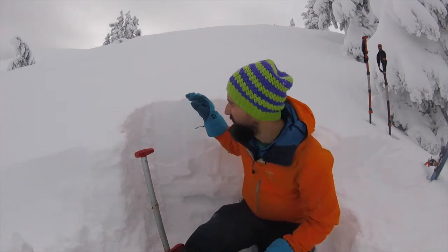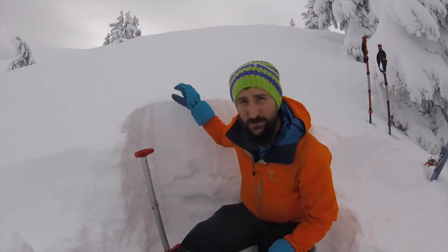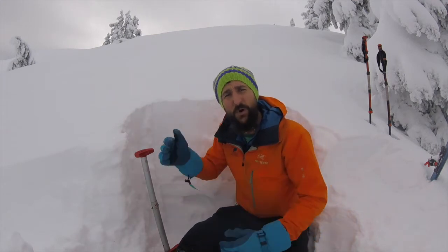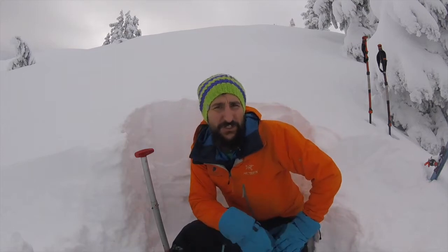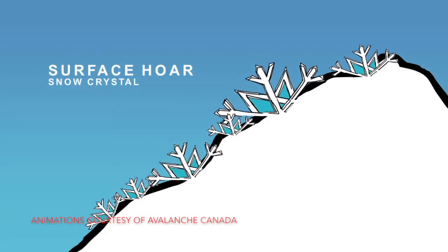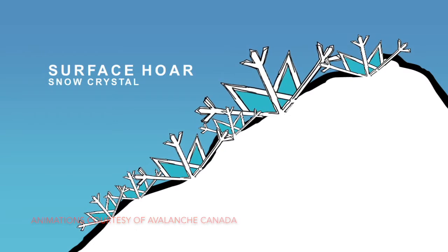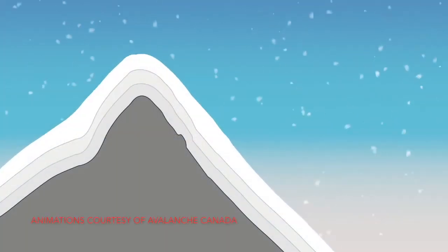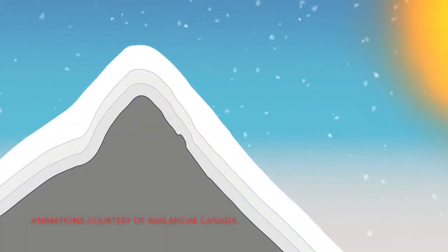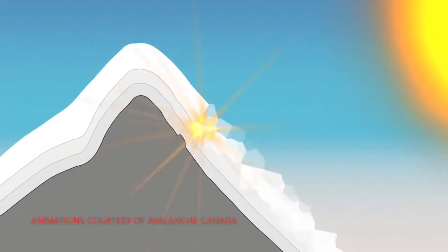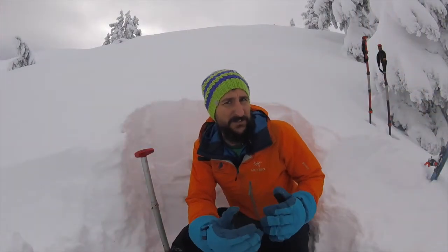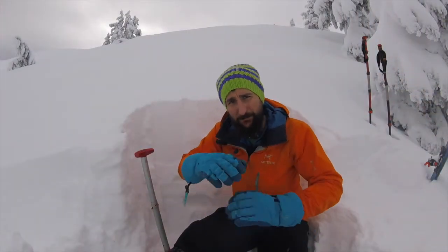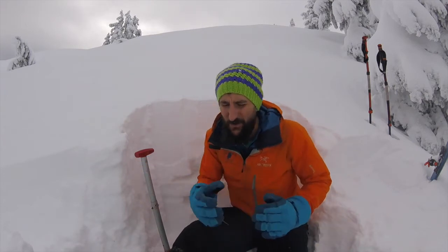Another type of metamorphosis is surface hoar, which grows on the surface of the snow but is only a problem when it becomes buried. Surface hoar is essentially the winter version of dew — on clear, cold nights it develops as a feathery, beautiful crystal on the surface. When buried, it can act as a weak layer, and we often associate it with whoomphing sounds and propagation. Buried surface hoar creates a very dangerous slab avalanche problem.